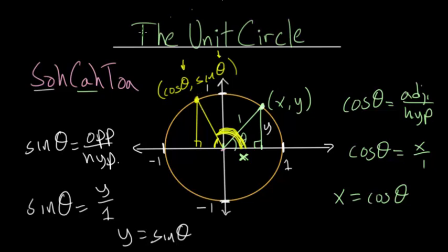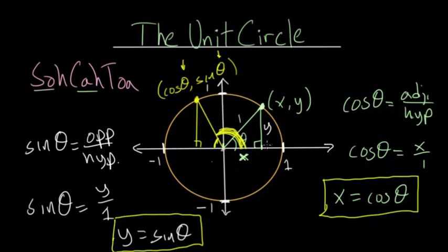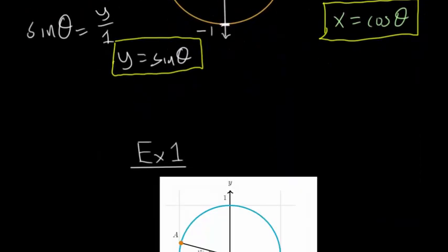The main takeaway from the unit circle is that the x-coordinate equals cos(theta) and the y-coordinate equals sin(theta). With that in mind, let's look at some example problems.